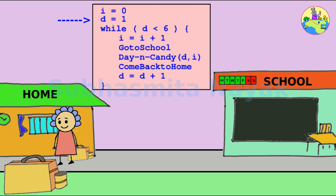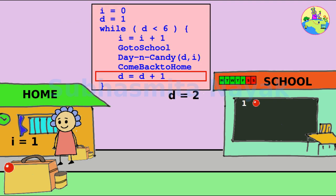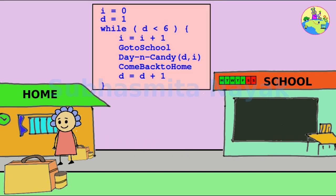So, we will move d equals 1 just before the starting of while loop, and move d equals d plus 1 to the end of the body, where d has to increase by 1 before proceeding for the next day. Now we are done.